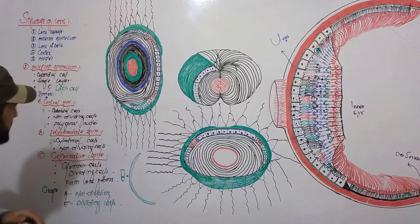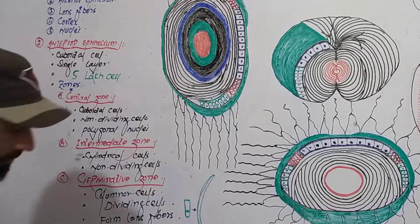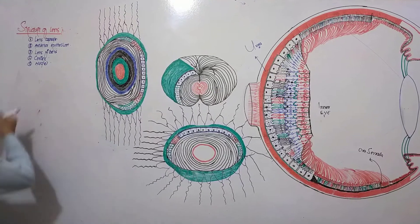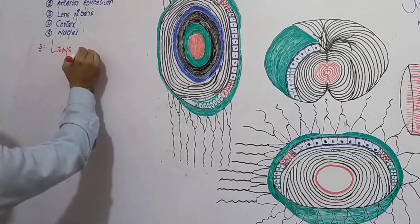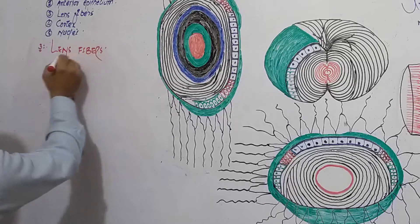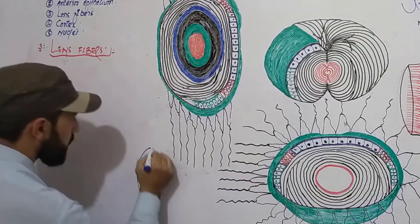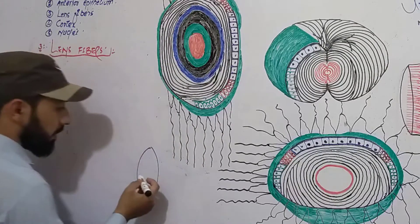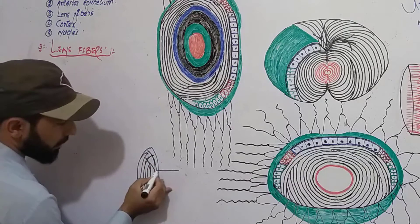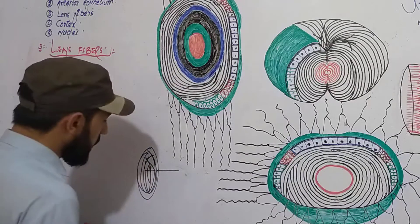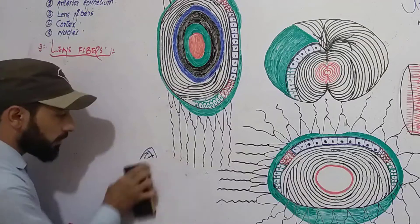Welcome back, friends. We previously discussed the interior epithelium of the lens. Now we are discussing lens fibers — the third point about the lens. Your lens is a transparent object; light can pass through it, and it has lots of fibers inside it. These fibers are also transparent, allowing light to pass through.